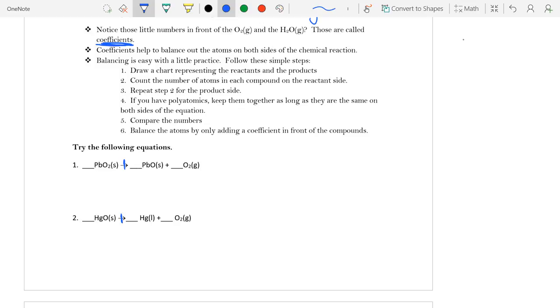But what you do first is we kind of draw a line on our arrows there. And that just kind of helps us remember, okay, we're looking at one side versus the other side. They're not combined yet. And we look at how many different elements we have in this compound. So we have a capital P and a capital O.